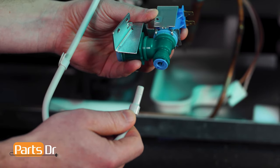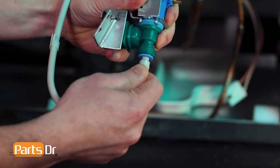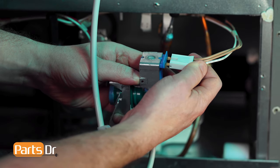To install the water valve, reconnect the water line by inserting it until it stops, then gently pull back to ensure it's locked in place. Then reconnect the electrical connector.